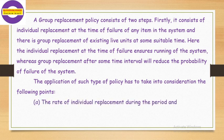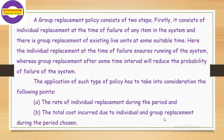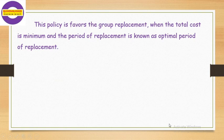First, the rate of individual replacement during the period and the total cost incurred due to individual and group replacement during the chosen period. This policy favors group replacement when the total cost is minimum, and the period of replacement is known as the optimal period of replacement.